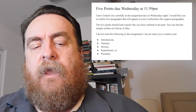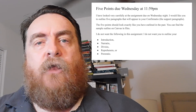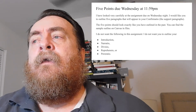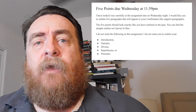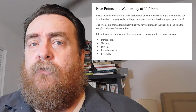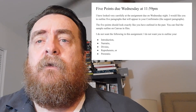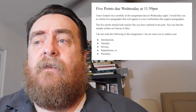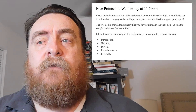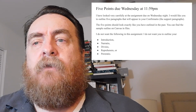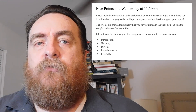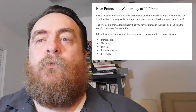Anticipate that after the revision essay has been turned in, I'll get back to being really strict about deadlines. I looked carefully at the assignment due on Wednesday night. I would like you to outline five paragraphs that will appear in your Confirmatio. Keep in mind, you can have more paragraphs in your Confirmatio than just five. The five points should look exactly how you have outlined in the past for those of you who've been doing it right. You can find the sample outline on Canvas in files. I do not want you to outline your introduction, Narratio, Divisio, Reprehensio, or Peratio. I only want Confirmatio.